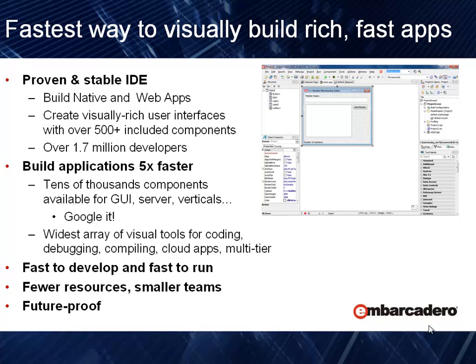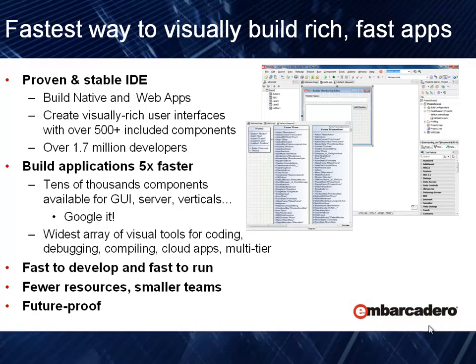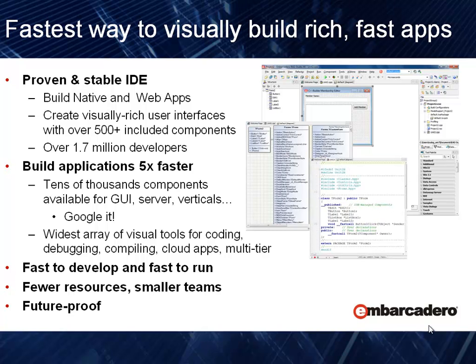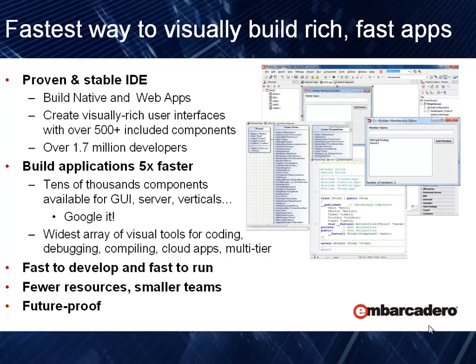C++ Builder XE is the fastest way to visually build rich, fast applications. It is built on a proven, stable IDE that can build native and web-based applications. There are over 1.7 million developers using the IDE around the world. The applications you build are 5 times faster because we use over 500 plus components inside the product, plus tens of thousands available for open source and commercial use. The applications you develop run very fast and allow you to develop with fewer resources and smaller teams. Any applications you build today with C++ Builder XE are future proof for tomorrow.